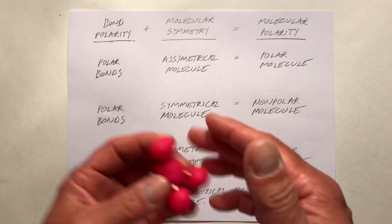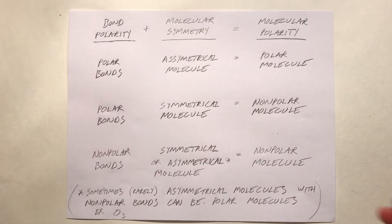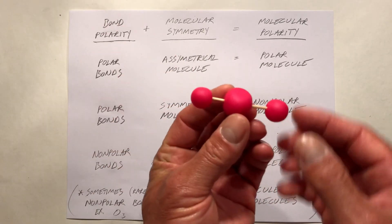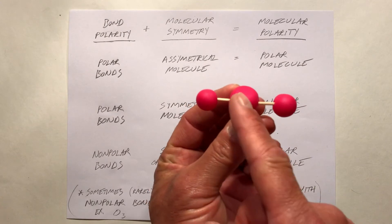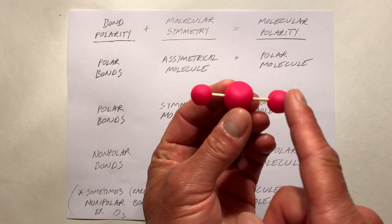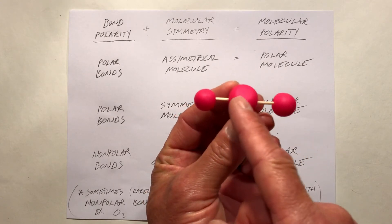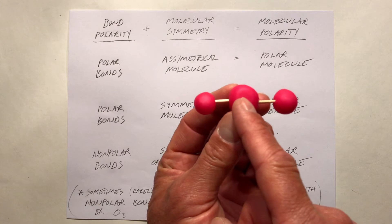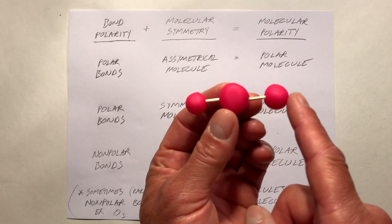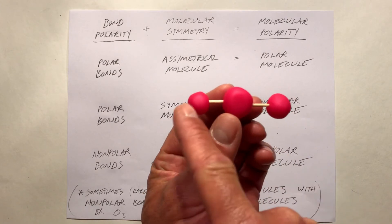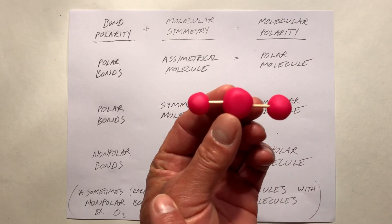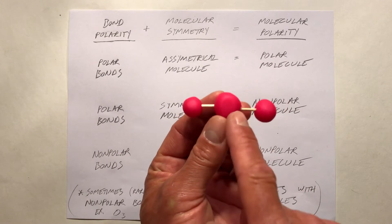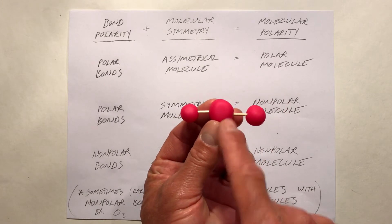Let's take a simple two-atom linear structure. If the central atom is a little delta minus and the outside atoms are delta plus, we would have polar bonds on a molecule like this.